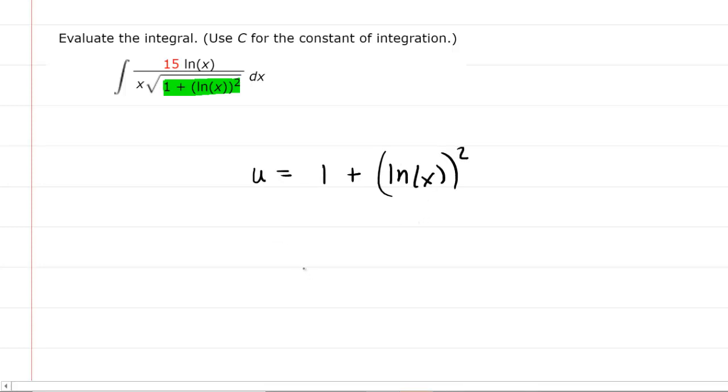With u-substitution we need to take the derivative. So du equals the derivative of one, which is a constant, is just zero. For the next term, we need to use chain rule. We'll move the power down: two times the natural log of x raised to the first power because you subtract one from the exponent. Then multiply by the derivative of the inner function, which is the natural log of x. So we multiply by one over x. Don't forget the dx here.